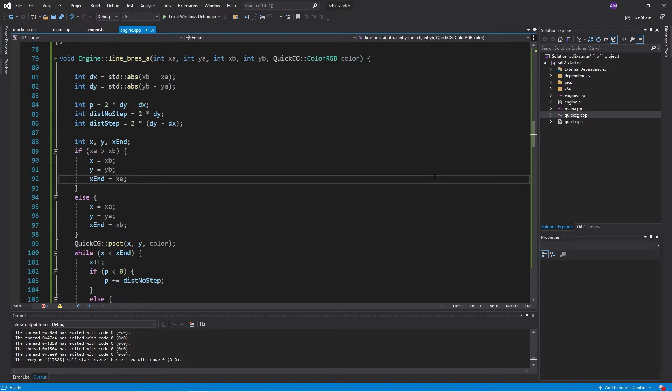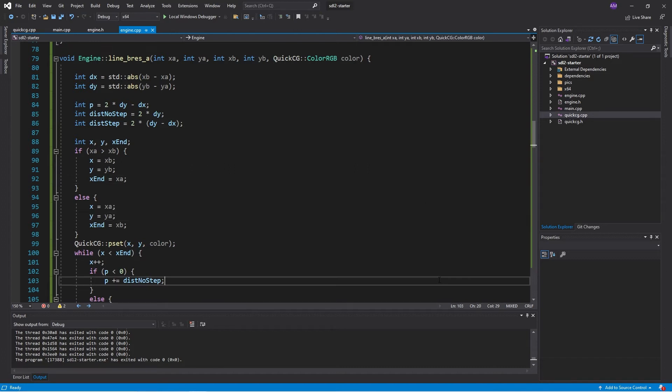Let's jump into the code and have a look at this. So here is a straightforward implementation of the Bresenham line algorithm under normal conditions.